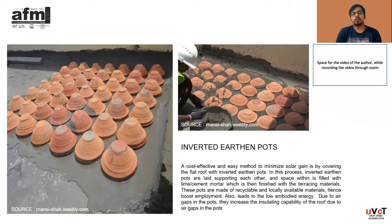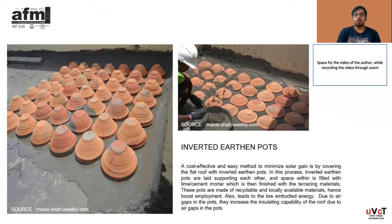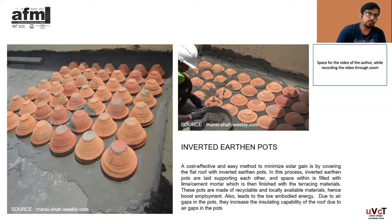Inverted earthen pots offer a cost-effective and easy method to minimize solar gain by covering the flat roof with inverted earthen pots. In this process, inverted earthen pots are laid supporting each other, and the space within is filled with lime or cement mortar, which is then finished with the terracing material. These pots are made of recycled and locally available materials, hence boosting local employment. This also leads to low embodied energy. Due to the gaps in the pots, they increase the insulating capability of the roof, providing both thermal and sound insulation.